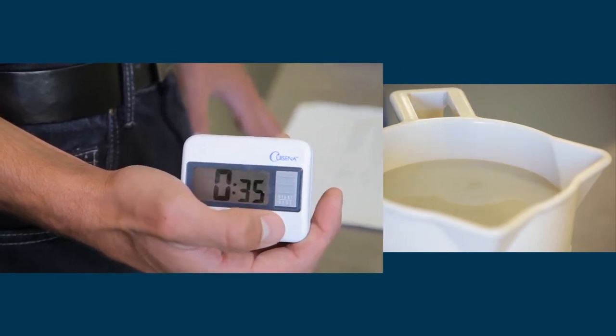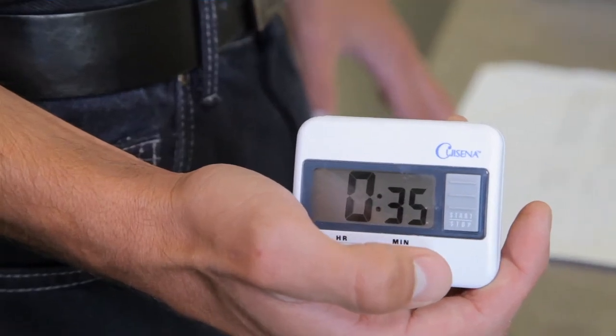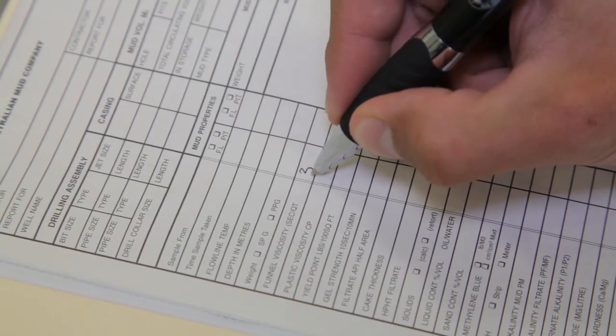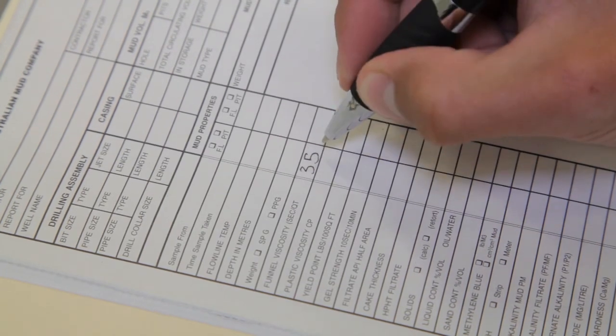This drilling fluid has taken 35 seconds. The funnel viscosity is noted down as 35 seconds.